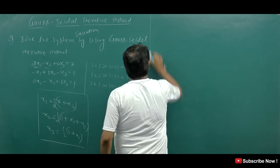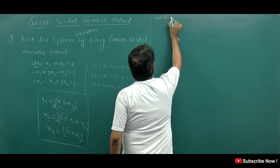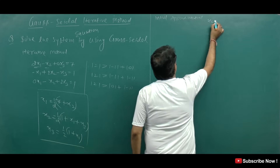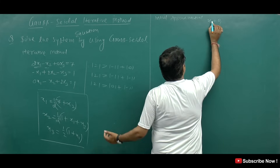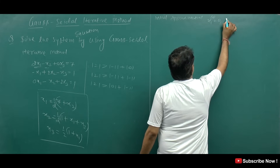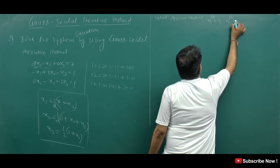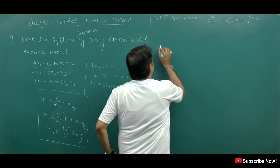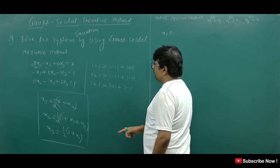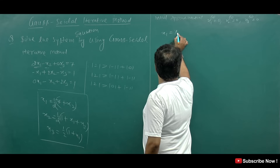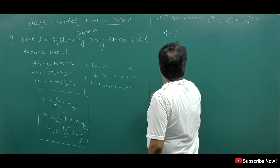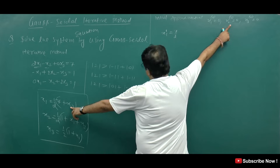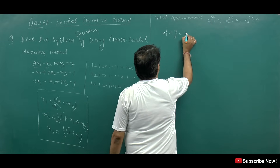For the initial iteration, we take the initial approximation: x1 = 0, x2 = 0, x3 = 0. Then the value of x1 in the first approximation: x1 = (7 + x2) / 2 = (7 + 0) / 2 = 3.5.